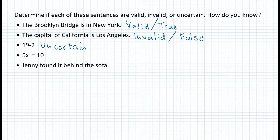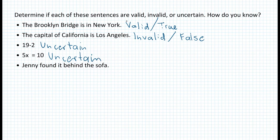What about 5x is equal to 10? That is also uncertain because it all depends what x is, so we write uncertain. And finally, Jenny found it behind the sofa — that is also uncertain, because we don't know what 'it' is. Did she find what she was looking for or did she find something else? So again, we write uncertain.